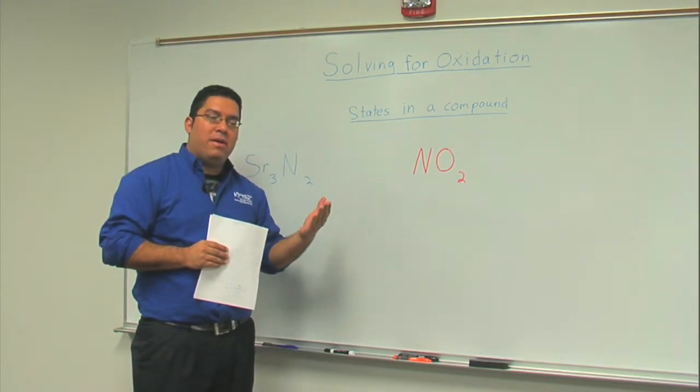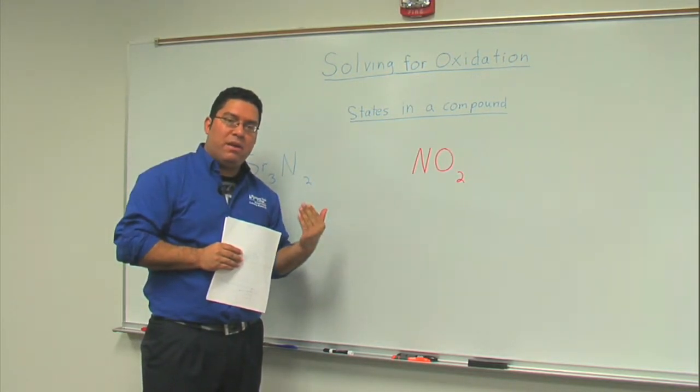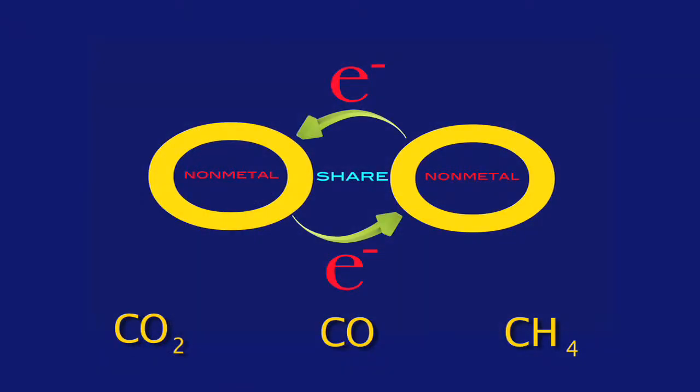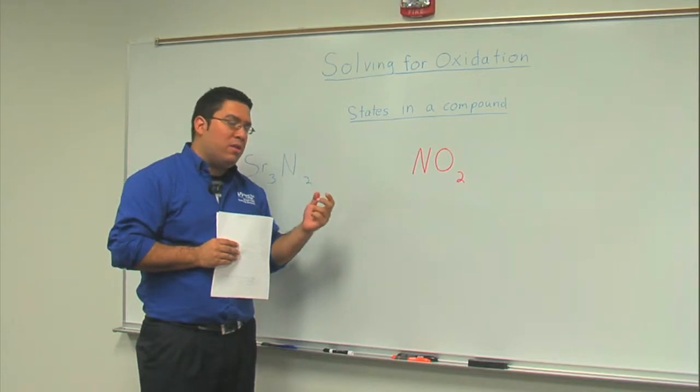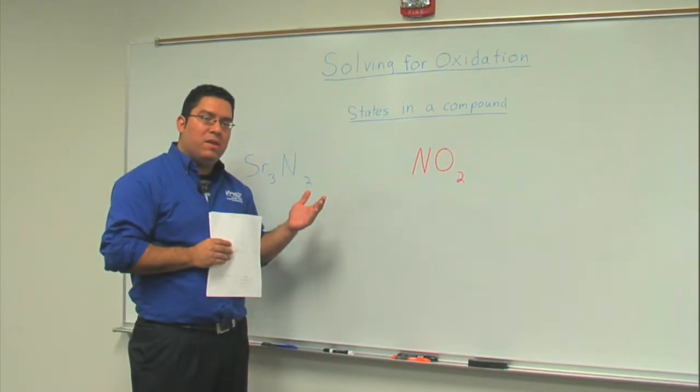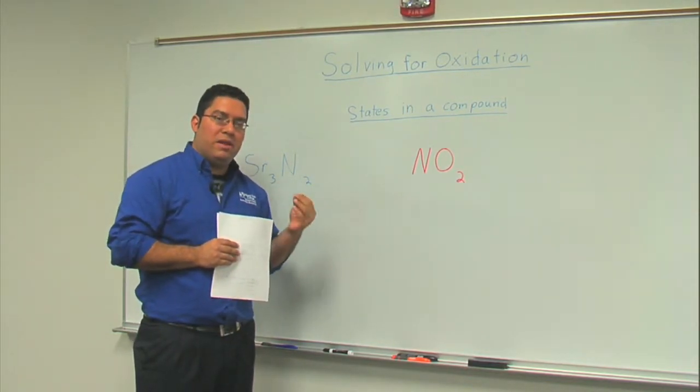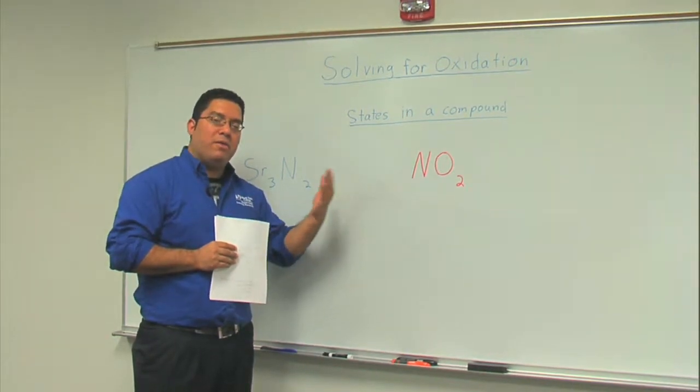In the previous videos we looked at ionic compounds and how they donate and accept electrons. We looked at covalent compounds and saw in depth how they share electrons. Now we're going to take a closer look at the individual elements and try to find out how many of these electrons are being given or how many are being accepted.